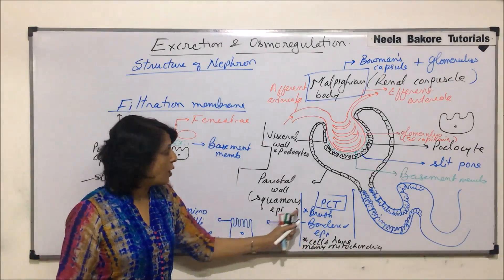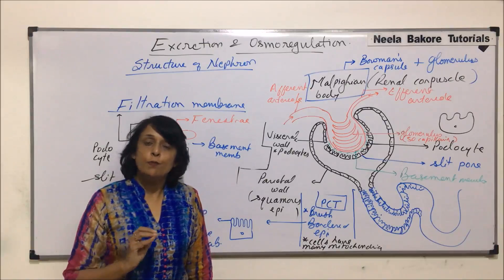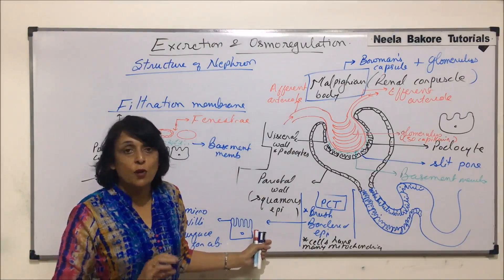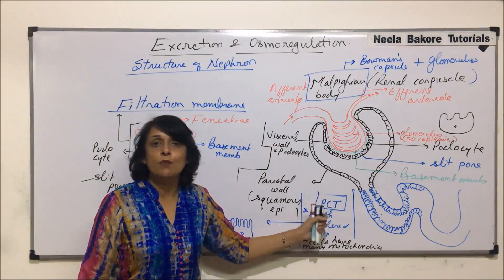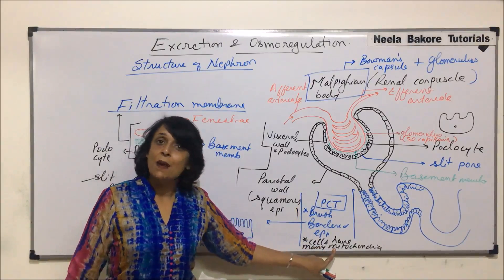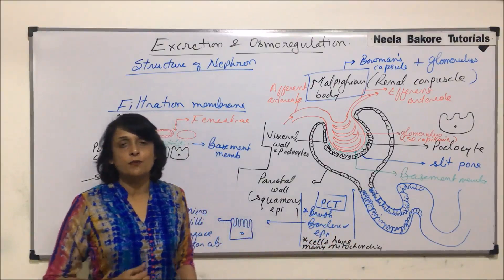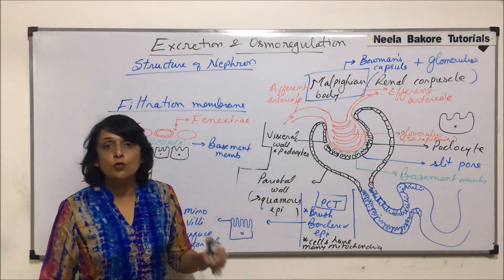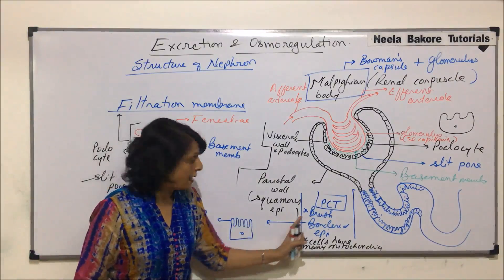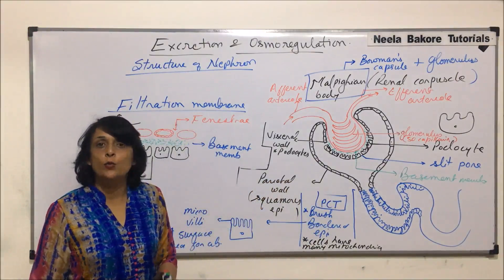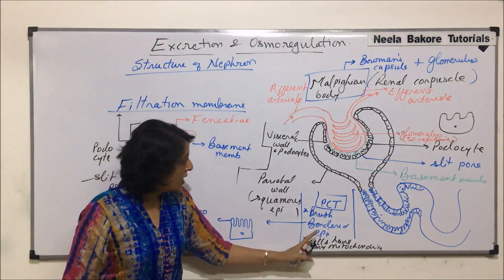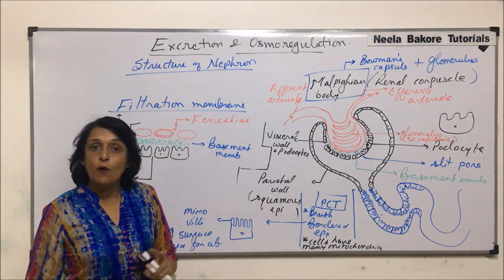What are the things which get absorbed in PCT? 100% glucose, 100% amino acids, about 70 to 75% sodium ions and potassium ions, and water also gets absorbed. Glucose, amino acids, sodium, potassium — these are all actively absorbed, and that is why energy is required, which is provided by the mitochondria. PCT is mainly associated with active absorption, and for active absorption it has two things: mitochondria to provide energy, and brush bordered epithelium to increase the surface area for absorption.